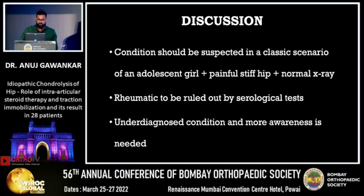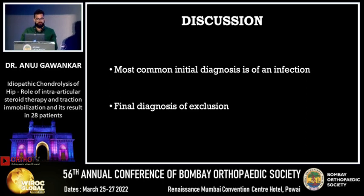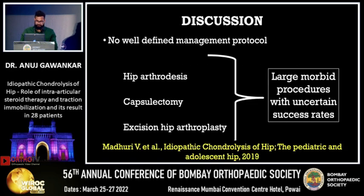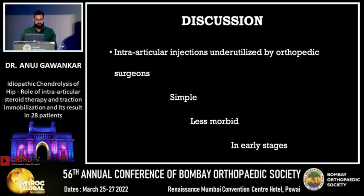Idiopathic chondrolysis of the hip should be suspected in the classic scenario when an adolescent girl presents with a painful stiff hip and a normal-looking x-ray. Dramatic conditions must be ruled out by serological tests. It is an underdiagnosed condition and more awareness is needed. The most common initial diagnosis is infection and the final diagnosis is one of exclusion. Per literature, various procedures are described — hip arthrodesis, capsulectomy, excision arthroplasty — but these are morbid procedures with uncertain success rates. Intra-articular injections are underutilized by orthopedic surgeons, though they are simple, less morbid, and can be used in early stages.